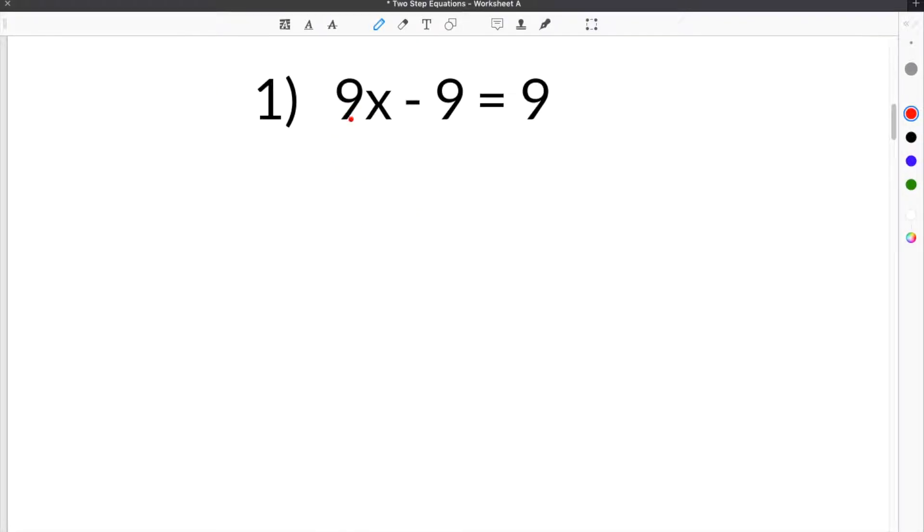All right, so our first practice problem gives us 9x minus 9 equals 9. So the first thing we have to do when solving two-step equations is we have to get rid of this minus 9.